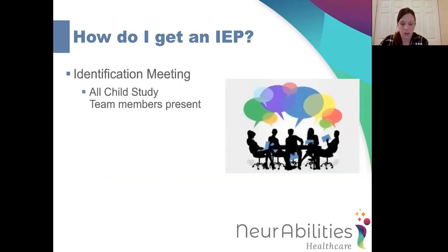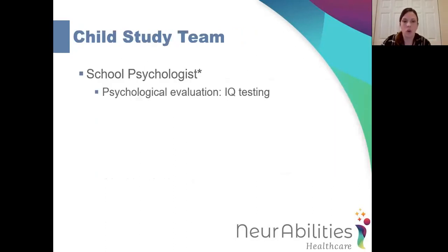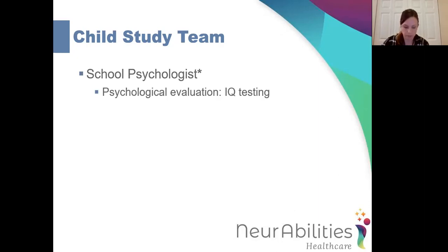Once you write that letter, you'll be scheduled what's called an identification meeting with the child study team. Before getting into the details of the identification meeting, let's talk about who the child study team members are. First, the school psychologist will complete what's called a psychological evaluation — aptitude or IQ testing. They're going to look at the strengths and weaknesses of your child and their level of intellectual development, as well as the child's social and emotional status and how these factors may affect their education and school performance.